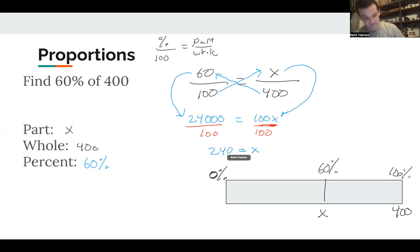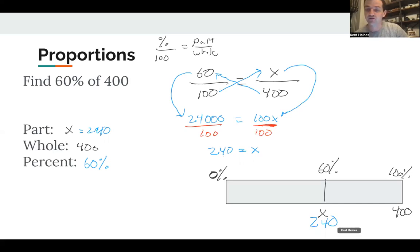We get X equals 240. So 240 is 60% of 400. For example, if there were 400 students in a grade and 240 of them showed up for the school dance, you'd say 60% of the students showed up.